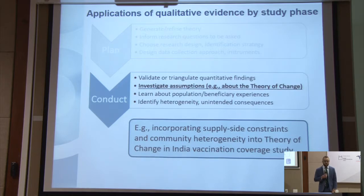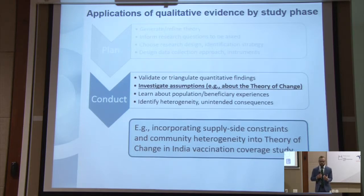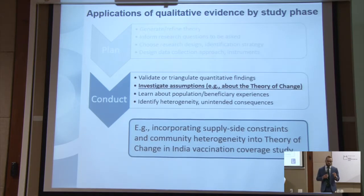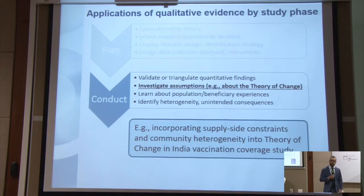What they found from the qualitative evidence is that yes, there were demand-side barriers, but they had completely neglected to measure some of the supply-side barriers. There was an issue observed with the skill and training of the nurses administering the vaccines, and some of the mothers were really upset at the way the vaccines were being administered. They also realized that there were some specific communities within their study area that had very different and much more strongly held views about vaccines. So they actually refined their theory of change to think about future research that was a bit more nuanced.